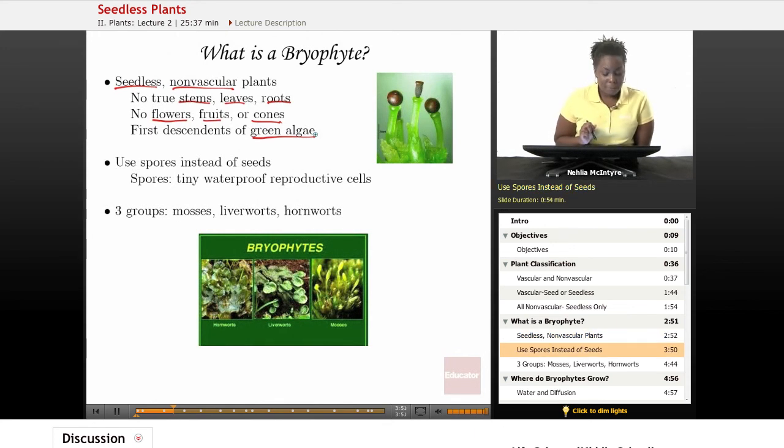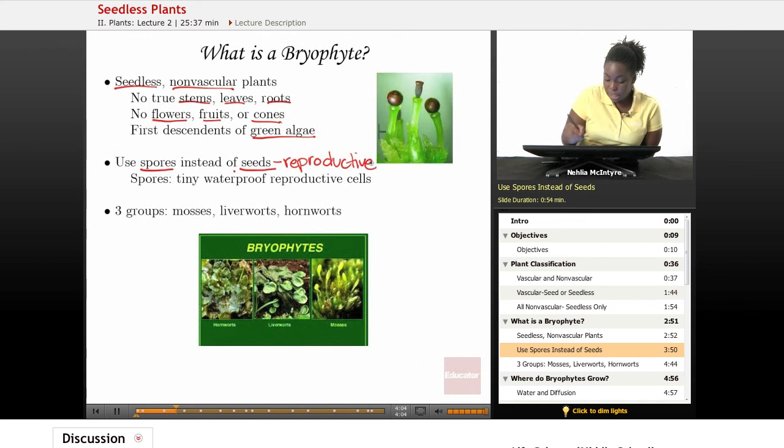In general, bryophytes, in order to make more bryophytes, they use what we call spores instead of seeds. These are the reproductive organs of the plants, which help the plant to make more of its own kind.